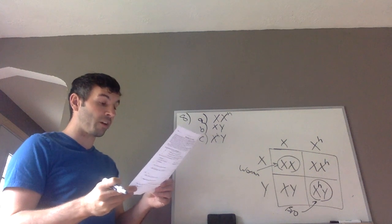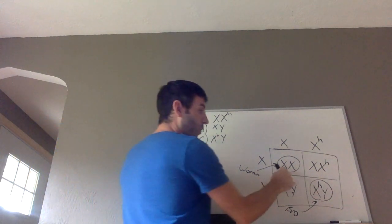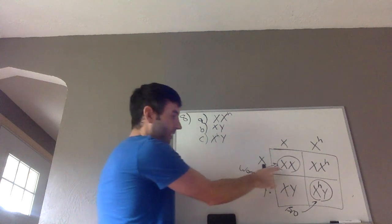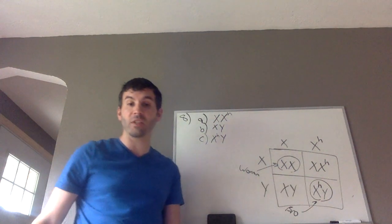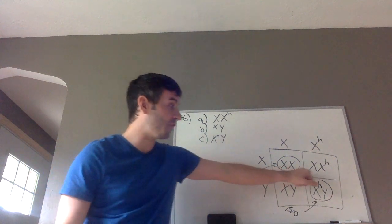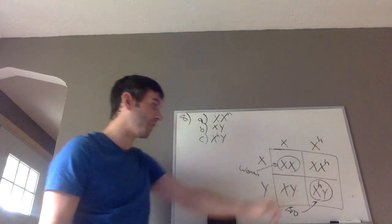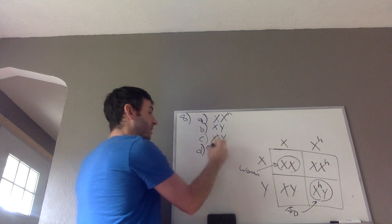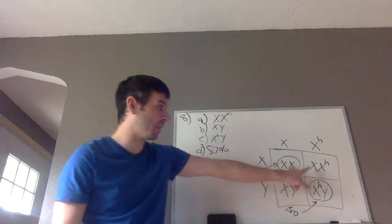For part D, it says: what are her chances of being a carrier? The woman is either one of the two daughters. She has a 50% chance to be a carrier and a 50% chance to be normal. So the answer is 50%, because the woman is one of those two — the brother we know is the hemophiliac one.